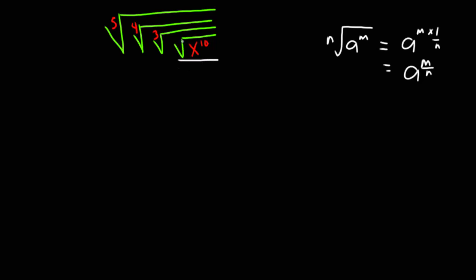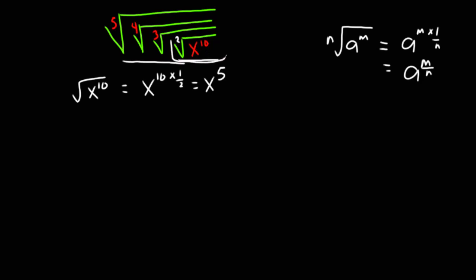Let me first start with the outermost root. Remember that a root sign with no number on it is a square root, meaning that it is the 2nd root. So the square root of x exponent 10 is given by x exponent 10 times one over 2, which is x exponent 5. I'm going to reduce this whole thing since I've now resolved the square root.